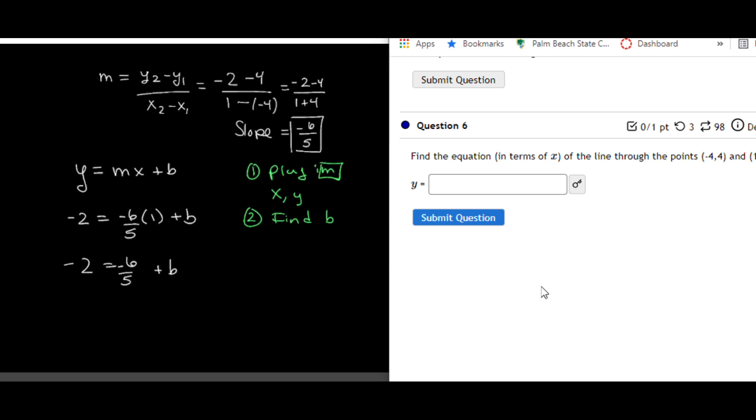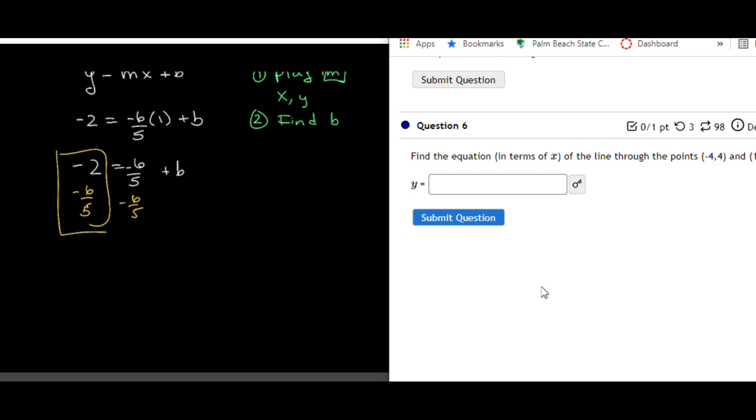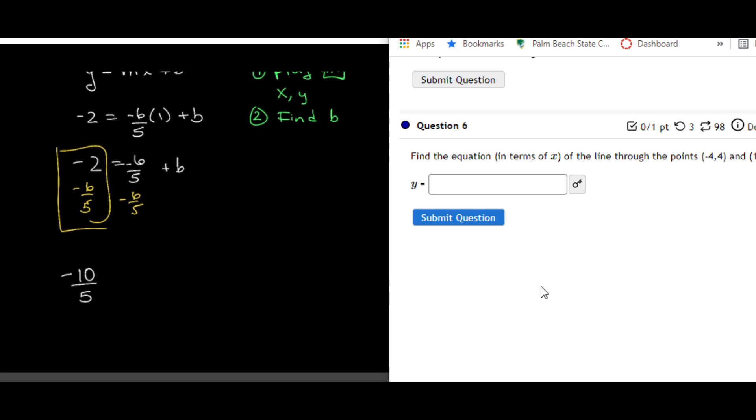And I need to turn this 2 into a denominator of 5 because I actually have to subtract 6 fifths from both sides to solve for b. So to do that, I multiply in the numerator and the denominator by 5. So I get negative 10 over 5. And notice, what's negative 10 divided by 5? Just negative 2. And then I subtract 6 over 5. And that gives me negative 16 over 5. And that is equal to b.